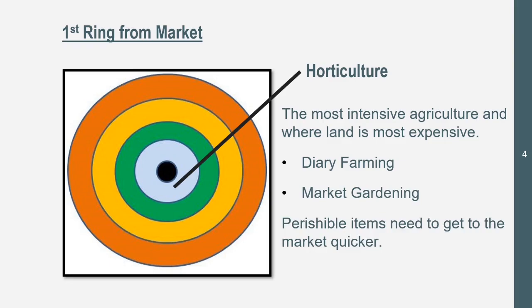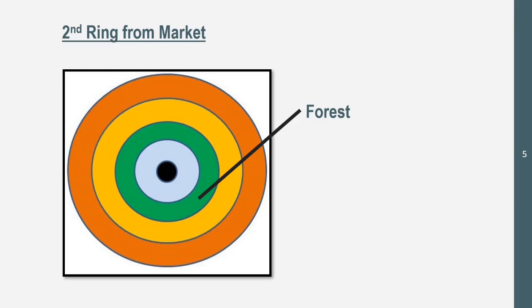Examples of this include dairy farming and market gardening. These create perishable items that need to get to the market quicker. Milk spoils, so it needs to get to market before it spoils. Market gardening may include fruits and vegetables that can grow mold or fungus. Anything that can perish quickly, we're going to see closer to the market, usually in this first ring.